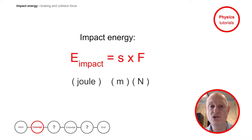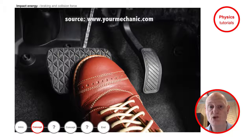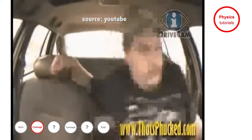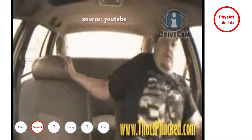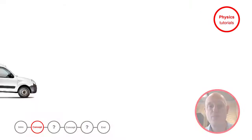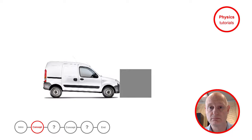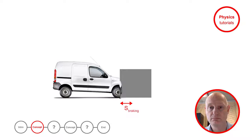Let's compare the situation of braking with the situation of colliding. In case of braking, the force is caused by the brakes and controlled by the driver. But in case of a collision, the force is an uncontrolled impact force. The braking distance is the distance traveled while braking, but in case of a collision, the braking distance is equal to the deformation of the car.